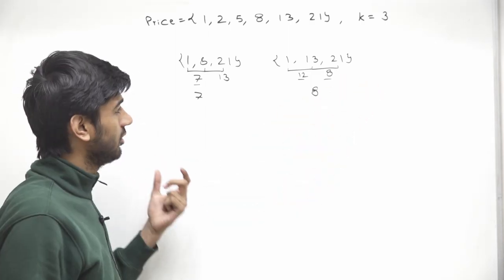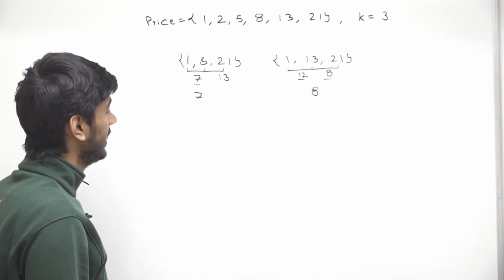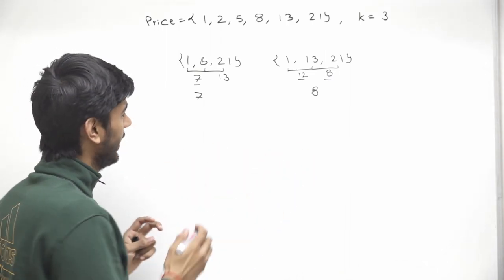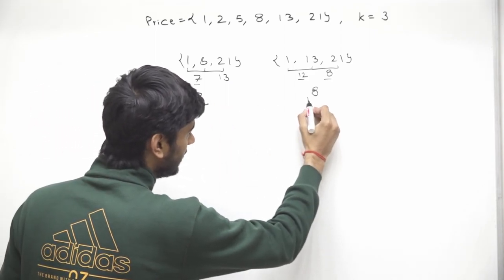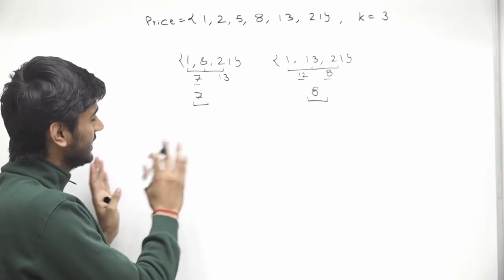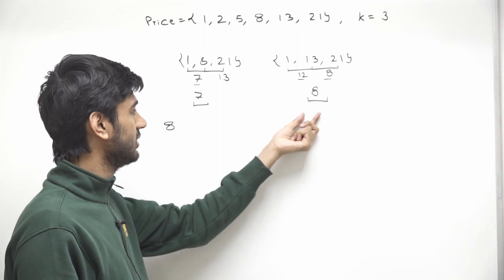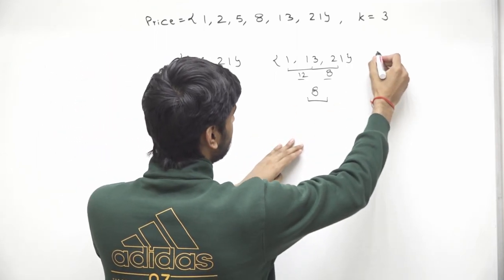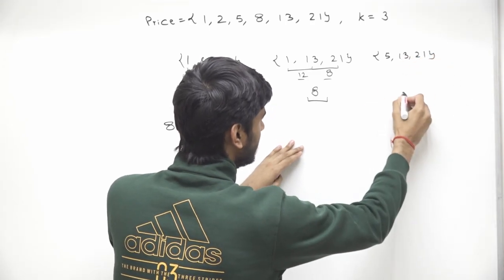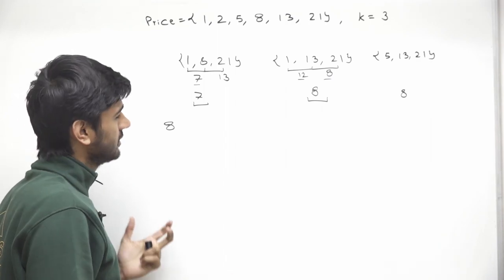We can have other baskets with three different candies, and we are interested in the one with maximum tastiness. The answer for this test case is 8. Other combinations can also give tastiness 8 — for example, picking 5, 13, and 21 also gives tastiness 8.